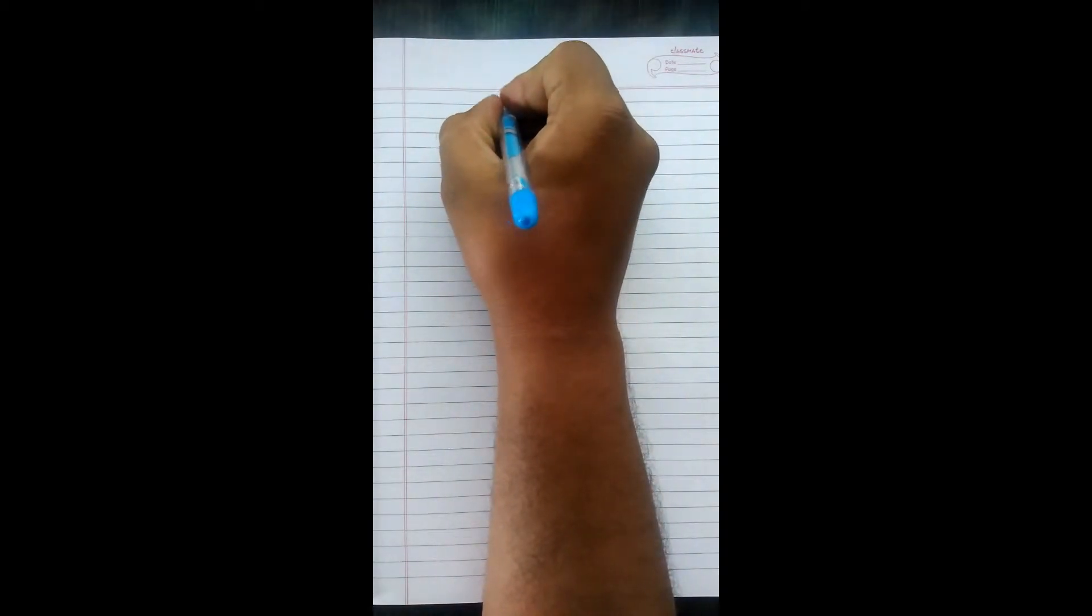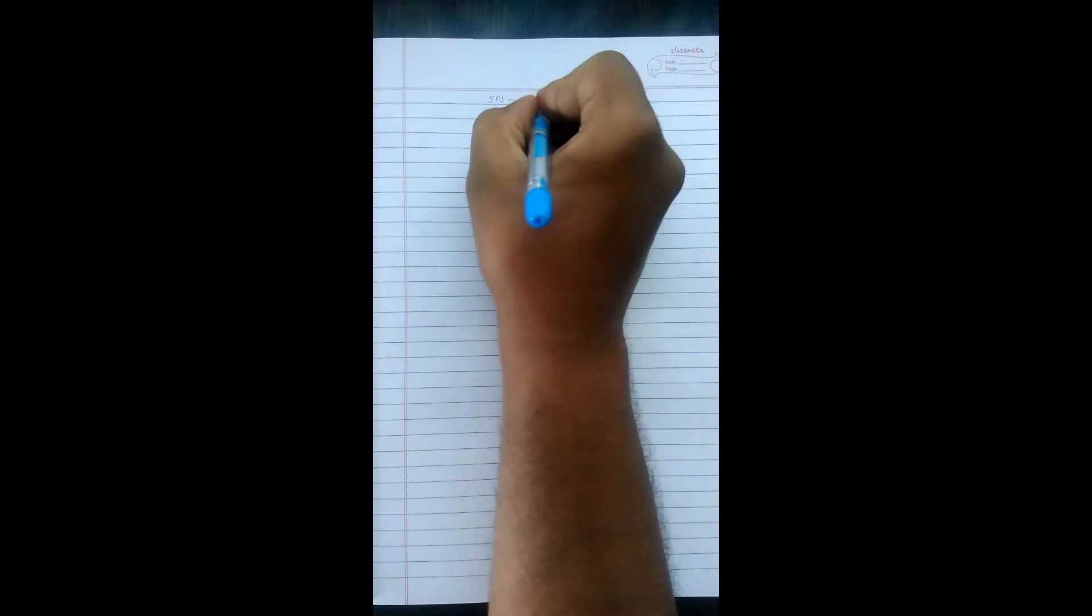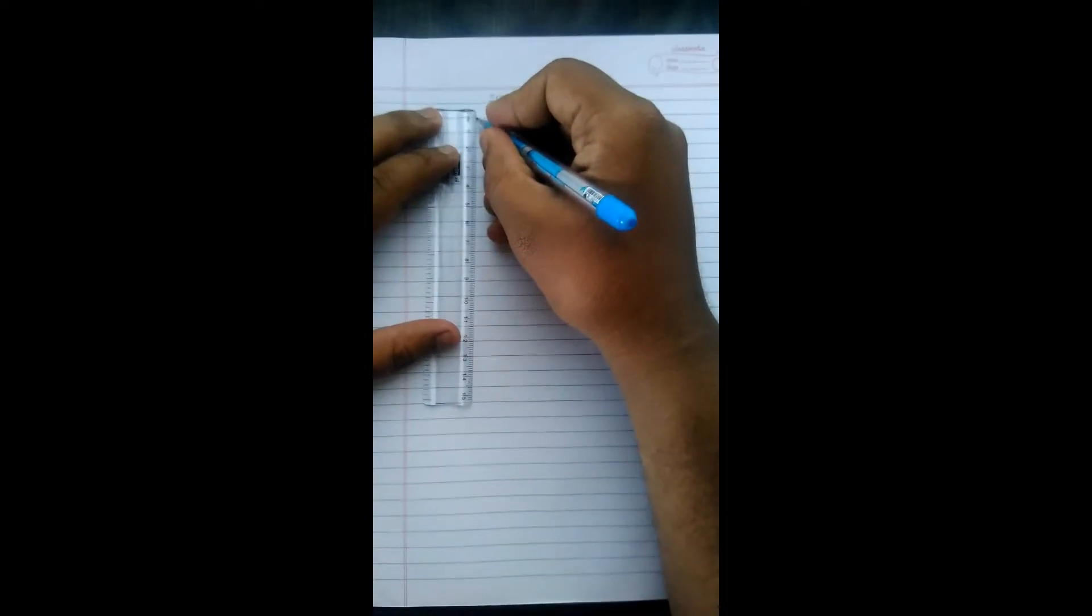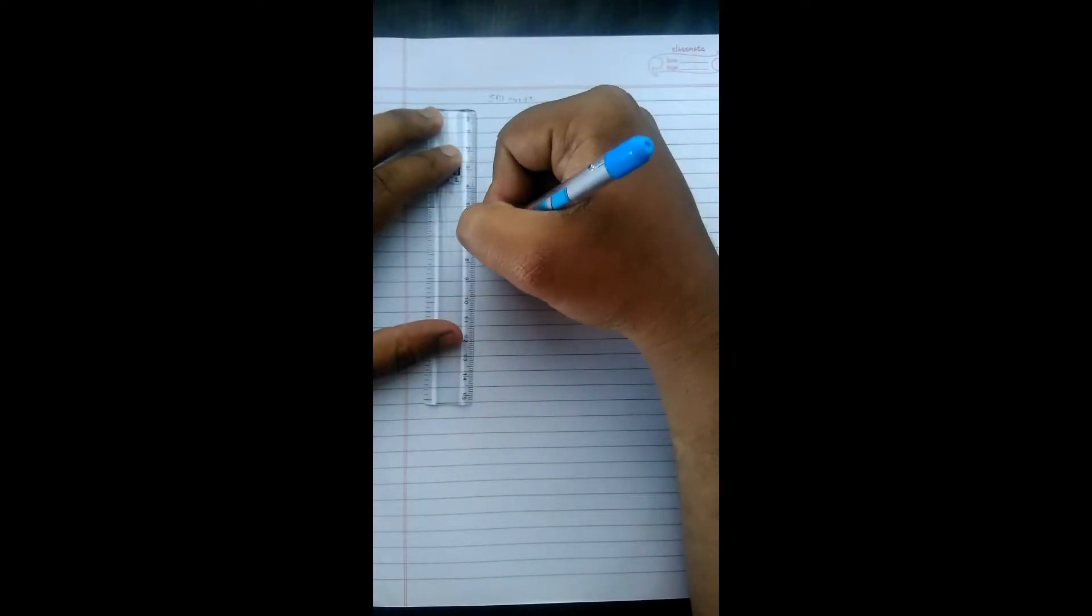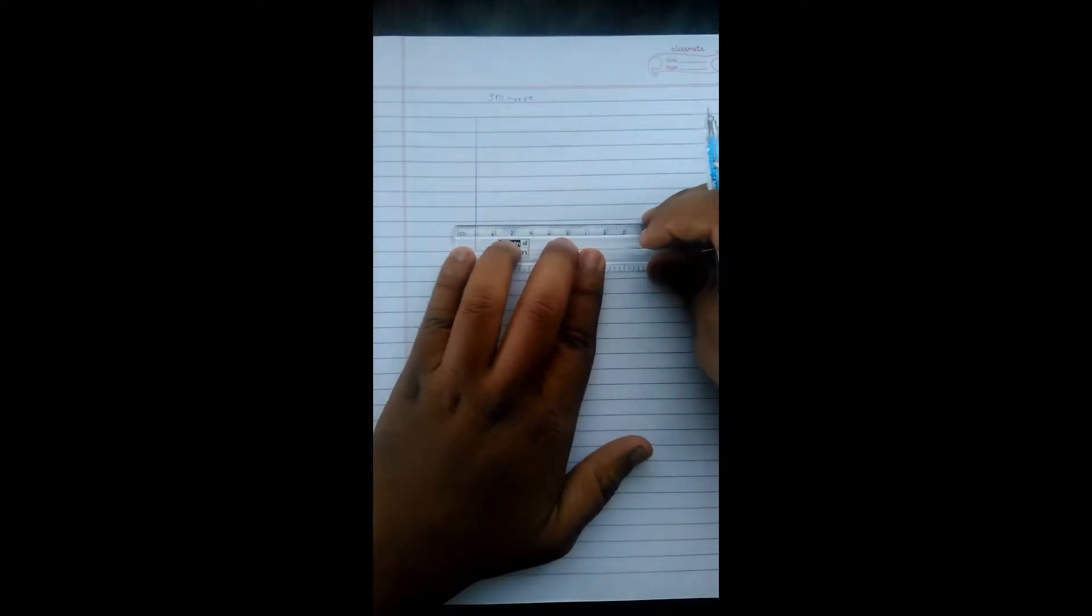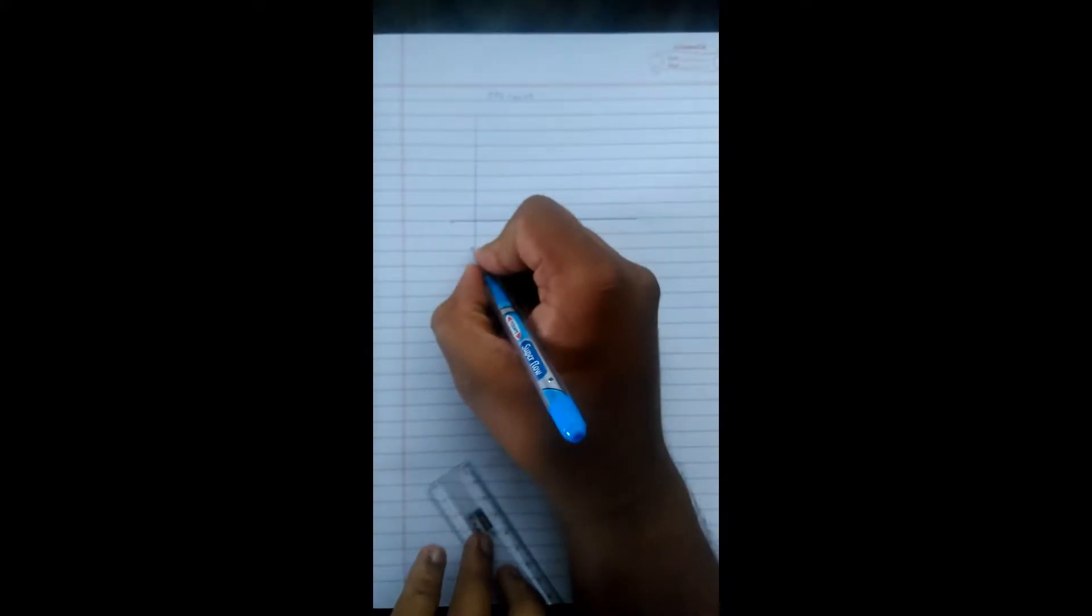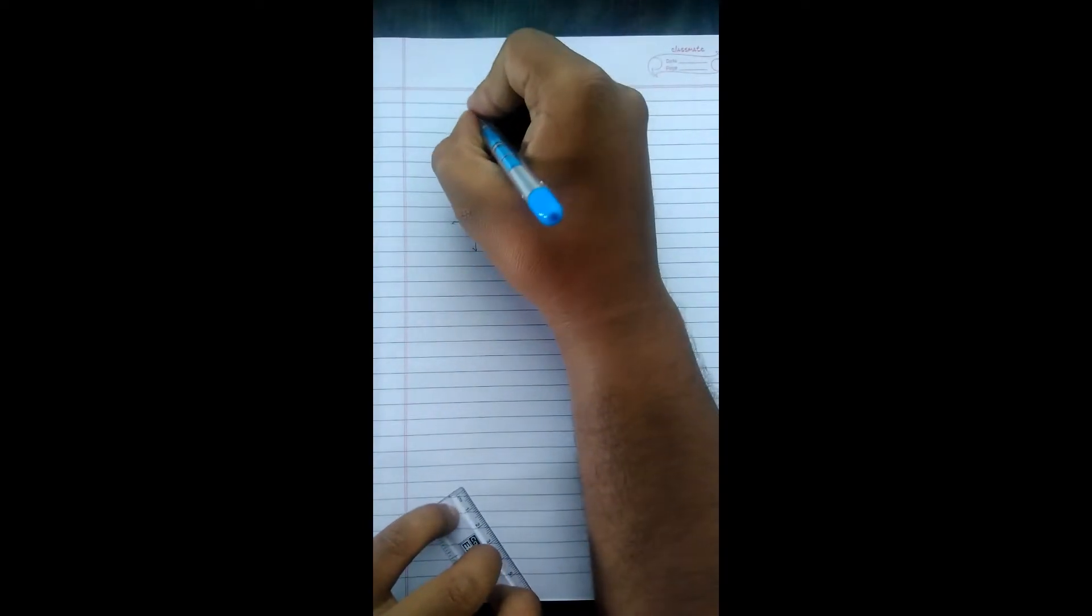Okay, let's start. First it is S-N curve. For any drawing curve or plotting curve we need two axes, that are x-axis and y-axis. This is our y-axis, this is our x-axis.